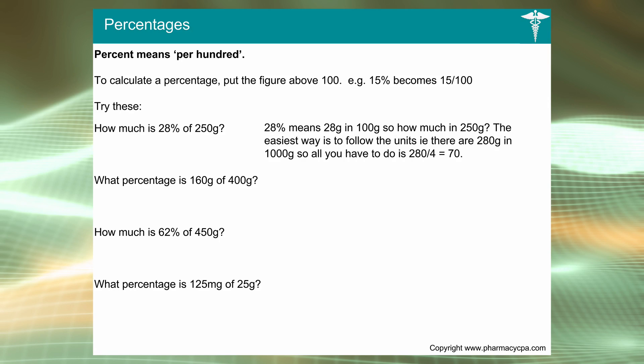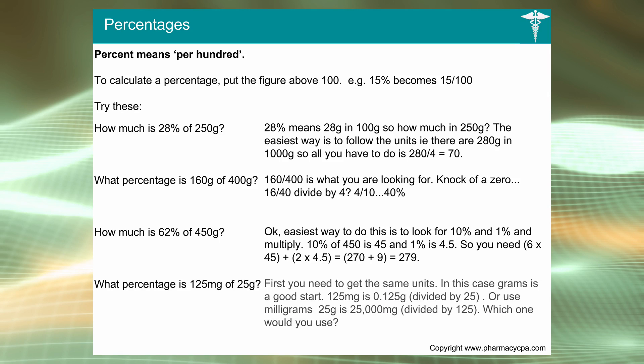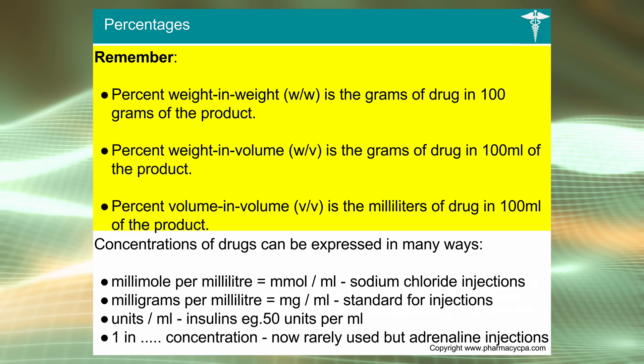What percentage is 160 grams of 400 grams? You're putting 160 over 400. You can see the common denominator is 4, so it'll be 40 percent. Is that right? Well, you know that 200 grams is going to be 50 percent because it's half of 400, so it looks about right. And 40 grams is going to be 10, so you just minus it. You could do it that way, quite straightforward.